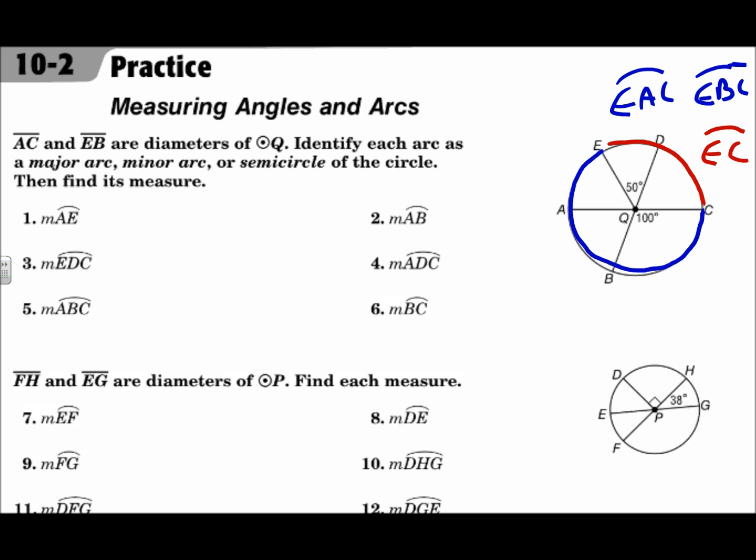A semicircle is exactly halfway around, arc AEC is a semicircle, arc DAB is a semicircle.